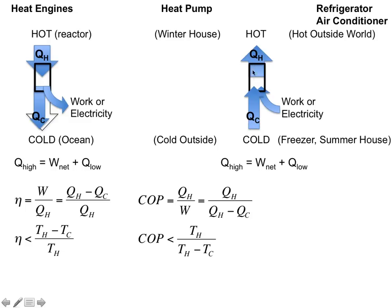The larger the difference in temperatures, the lower our coefficient of performance, because we have to push heat against this temperature gradient. What's also interesting to note is that this coefficient of performance can be much greater than 1 or 100%, meaning that with one joule of energy we could move many joules of energy from the cold to the hot. In fact, as the difference in temperature between the hot and cold approaches zero, we would have an infinite coefficient of performance, meaning we could move an infinite amount of heat with no energy.